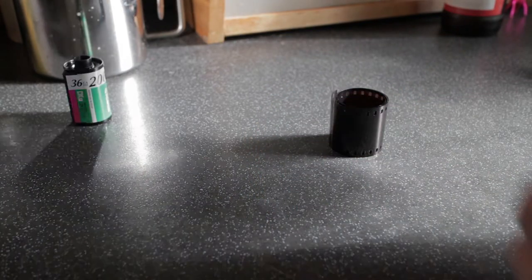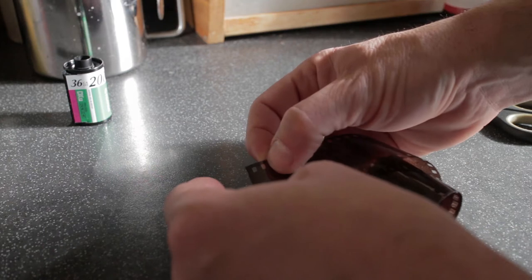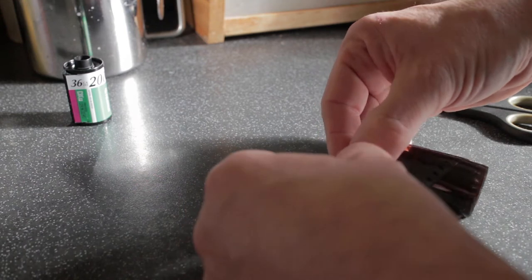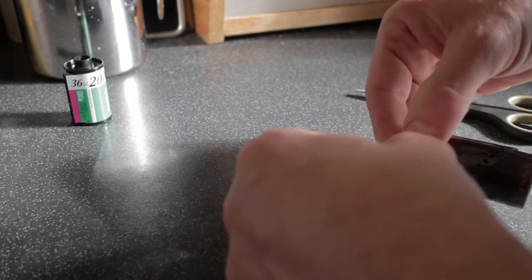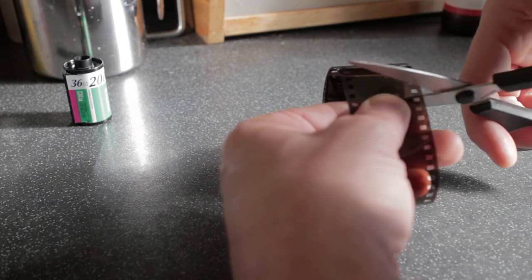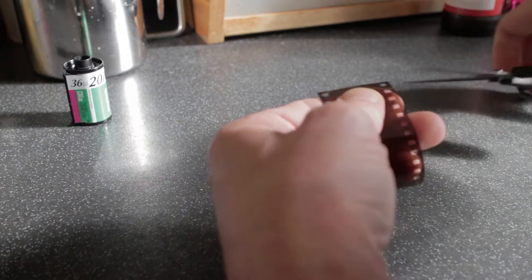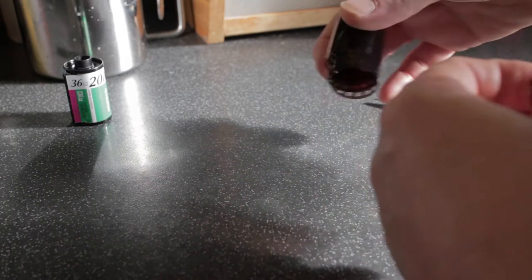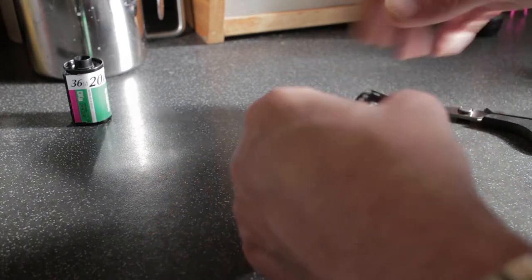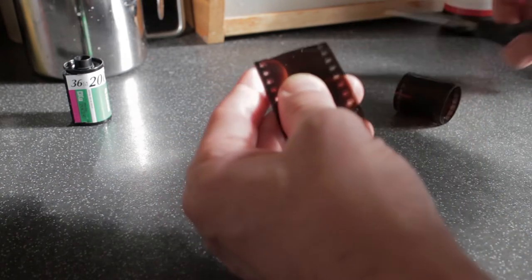And then to make this we need a pair of scissors and you need to count in about 18 sprocket holes. There you go, so 18 sprocket holes is good. A little more is not going to hurt if you've got enough film, but definitely no less. And then similarly with the second one, roughly will do, doesn't have to be exact.